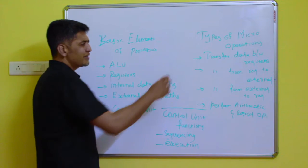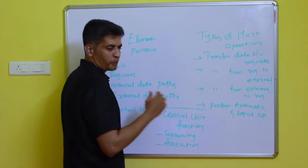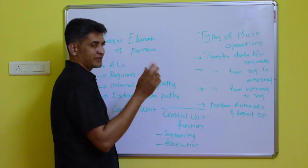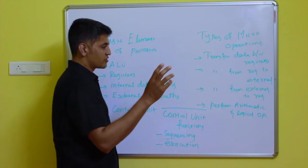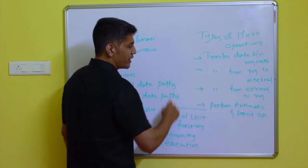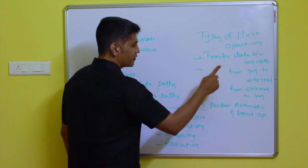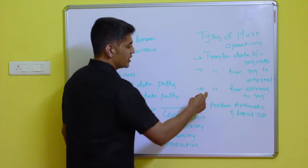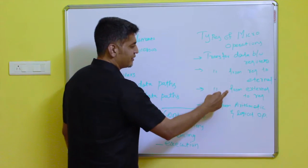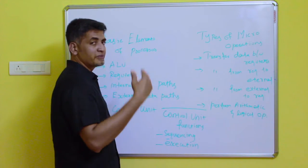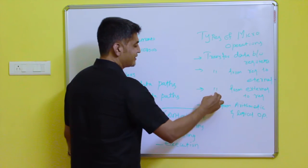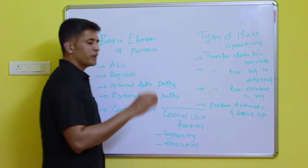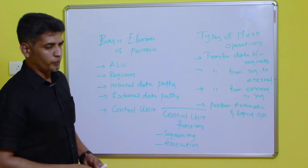The second topic is the types of micro operations. The first micro operation is transferring data between registers. The second is transferring data from a register to external memory. The third is transferring data from external memory to a register. The fourth is performing arithmetic and logical operations.